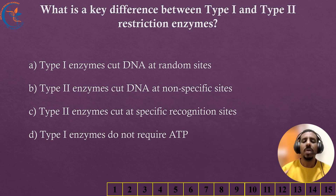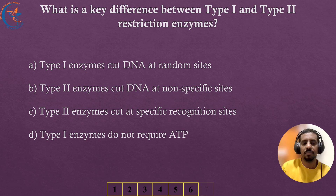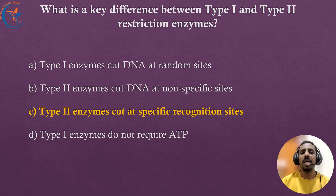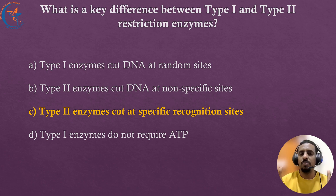What is the key difference between type I and type II restriction enzymes? Type II restriction enzymes are important tools in molecular biology because they cut DNA at specific sequences, making them precise and predictable. In contrast, type I restriction enzymes cut DNA at random positions, making their cleavage pattern more complex and less useful for precise genetic work.